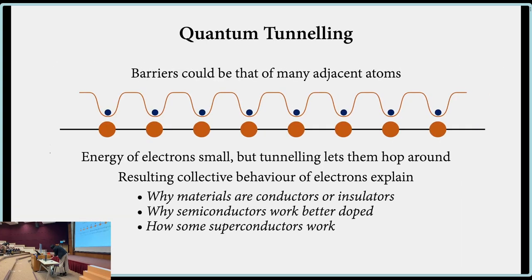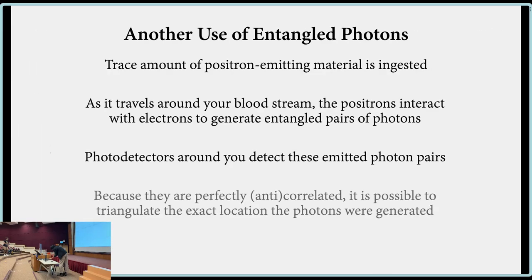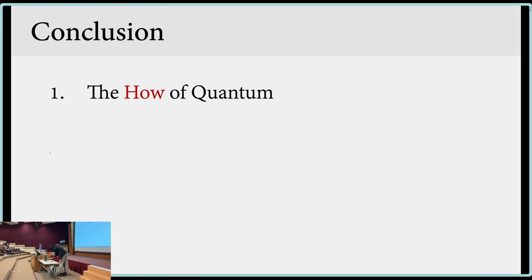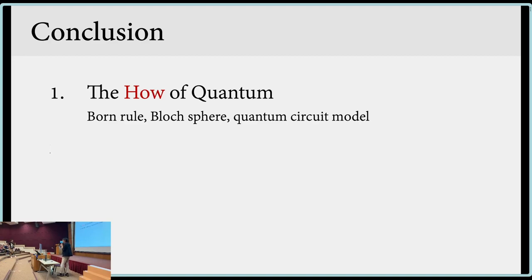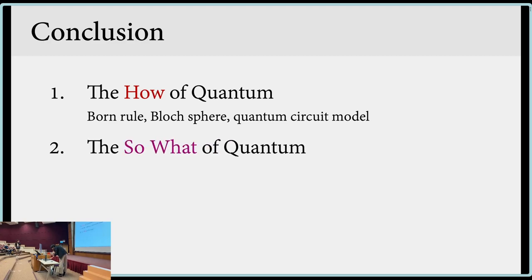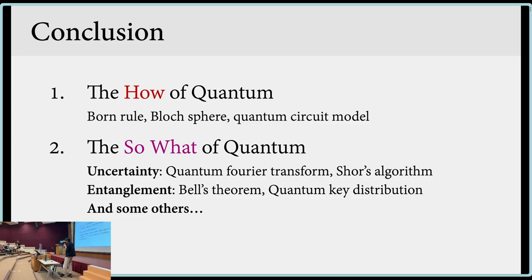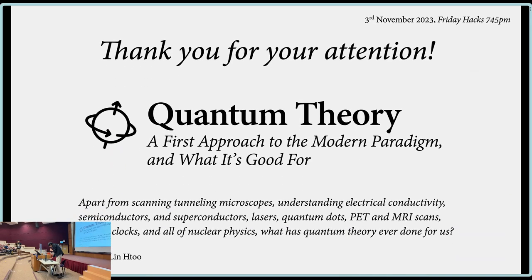Let me go to the conclusion slide. The geometric picture I showed you is a real mathematical thing. The so what of quantum: we have the quantum Fourier transform with exponential speedup; Shor's algorithm with exponential speedup for prime factorization; and entanglement — we have Bell's theorem, and how we can use it is in having a way to distribute private keys through quantum key distribution, and others. Thanks for your attention.